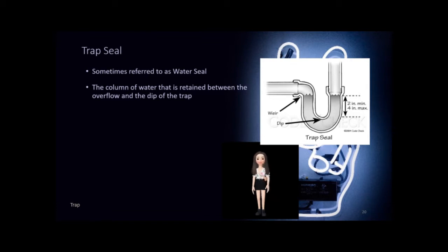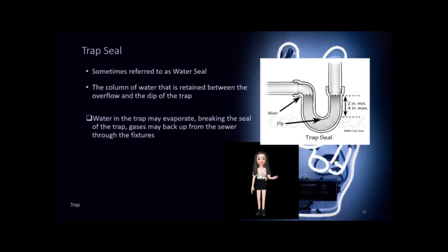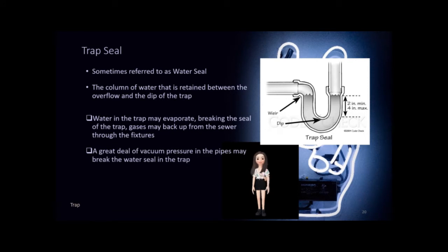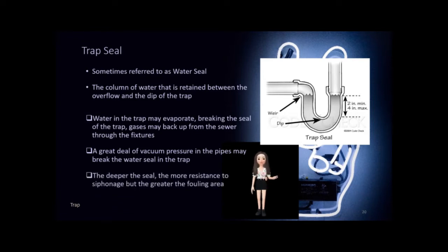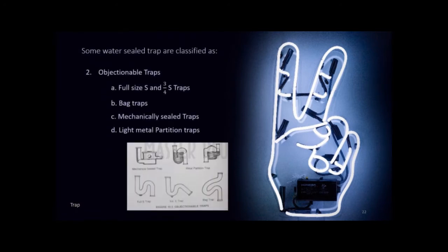The trap seal, also referred to as water seal, is the column of water retained between the overflow and the dip of the trap. A trap seal may be broken if a fixture is infrequently used and the water evaporates, allowing gases to back up from the sewer. It may also be broken by excessive vacuum pressure in the pipes, which is why a vent system is attached to equalize pressure. A minimum depth of 2 inches and a maximum depth of 4 inches are common standards. Water-sealed traps are classified as permissible traps and objectionable traps. The most practical permissible traps are the P-trap and the drum trap.